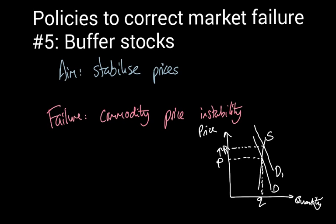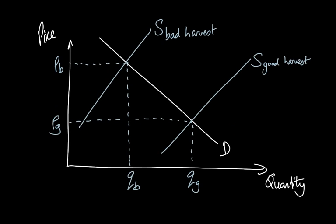So let's have a look at buffer stocks, what they are and how they work to reduce the volatility of commodity prices. Let's think about this market for food products, for agricultural products. Agricultural products is the normal scenario that we think about when we talk about buffer stocks. That tends to be the most commonly used example.